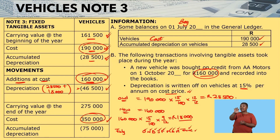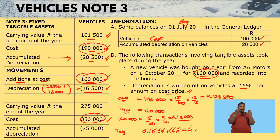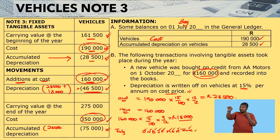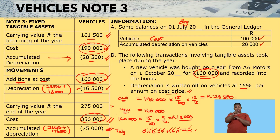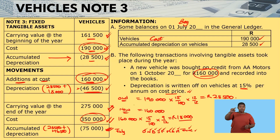The total accumulated depreciation at the end is calculated as: accumulated depreciation at the beginning, $28,500, plus depreciation for the year, $46,500, giving us $75,000. Carrying value is then cost minus accumulated depreciation. It is very important to remember that you handle the old and new vehicles separately when calculating depreciation.